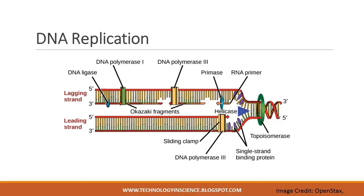The other strand, complementary to the 5' to 3' parental DNA, is extended away from the replication fork in small fragments known as Okazaki fragments, each requiring a primer to start synthesis. Okazaki fragments are named after the Japanese scientist who first discovered them. This strand is known as the lagging strand. The leading strand can be extended by one primer alone, whereas the lagging strand needs a new primer for each of the short Okazaki fragments.